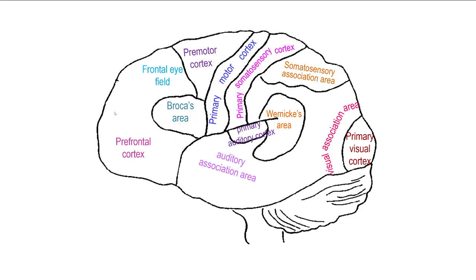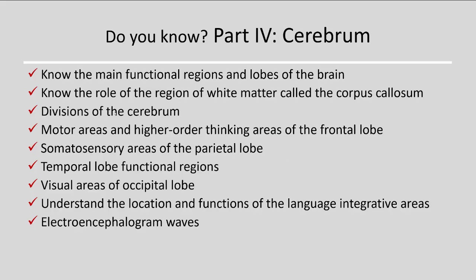This is the functional areas of the brain worksheet completely filled out. You should start from a blank one, identify all the regions indicated, and be able to mark what each region is responsible for. You should know the main functional regions and lobes of the brain, the role of the white matter and corpus callosum, the motor areas and higher-order thinking areas of the frontal lobe, somatosensory areas of the parietal lobe, temporal lobe functions, visual areas of the occipital lobe, and the location and functions of the language integrative areas.